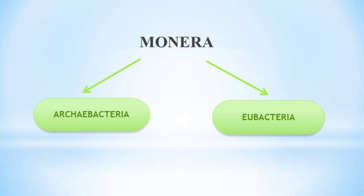Kingdom Monera is divided into two groups: Archaebacteria and Eubacteria. 'Archae' means primitive whereas 'Eu' means true. Archaebacteria are found in harsh and extreme environments, while Eubacteria are found in normal environmental conditions.